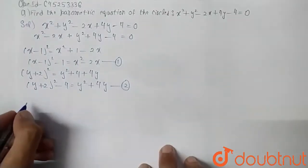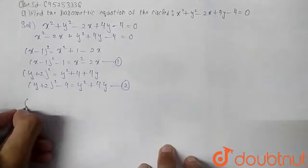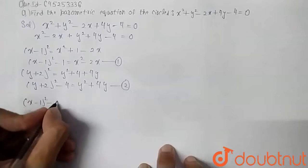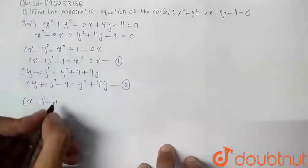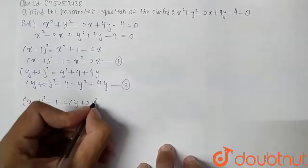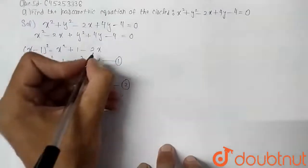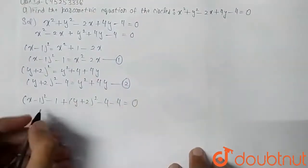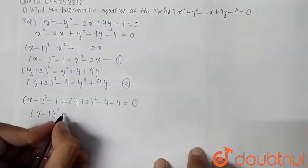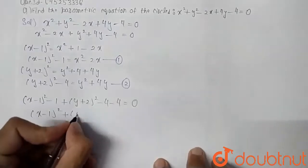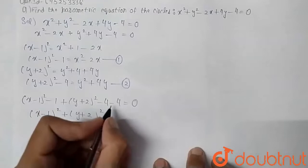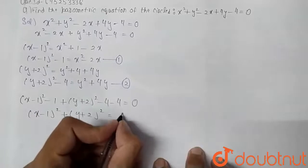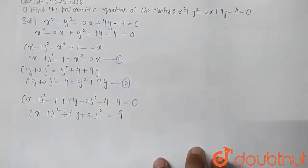Substituting, we get (x - 1)² - 1 + (y + 2)² - 4 - 4 = 0, which simplifies to (x - 1)² + (y + 2)² = 9. The constants -1 - 4 - 4 = -9 shift to the right side, giving us 9.